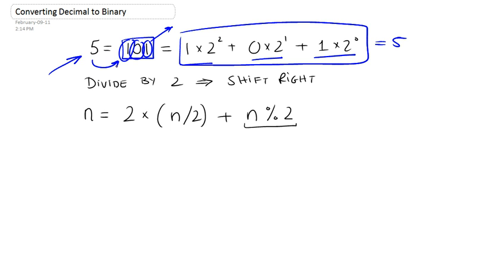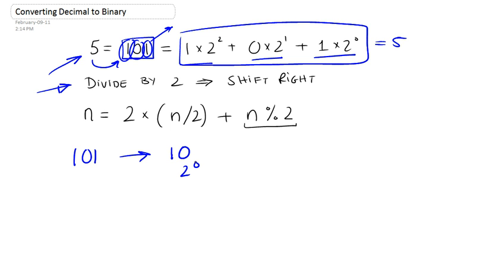Now, how do we go from this 5 to this representation? We make use of a very fine property that basically tells us that when you divide a binary number by 2, you're basically just shifting it to the right and dropping whatever number is to the right. So for example, if we were to take 101 and divide it by 2 — integer division, so we don't really care about the remainder — it would give us 10, which is 2 to the 0 plus 2 to the 1, which is 2.